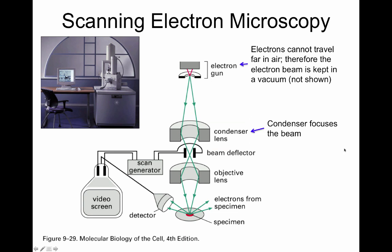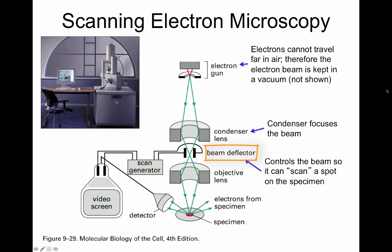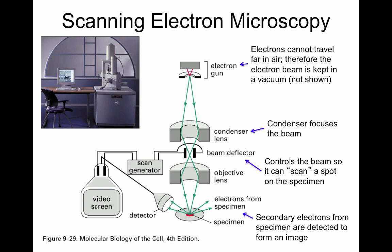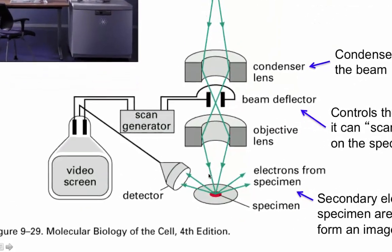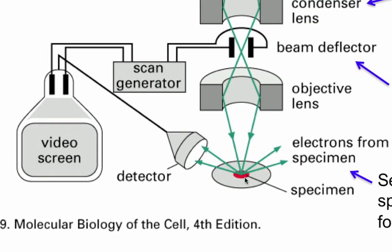Next, we're going to see a beam deflector. The beam deflector is going to be controlled by a scan generator, and that is going to allow the beam of electrons to be moved over the sample, allowing for the scanning of the sample to be performed. Last but not least, you have an objective lens, which is going to help visualize the magnification of the sample. The electrons are going to be moving onto the sample, and electrons are going to bounce off of the sample, generating electrons from the specimen.